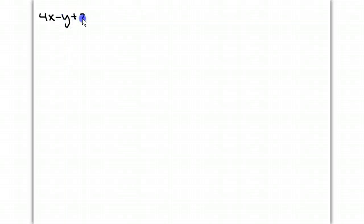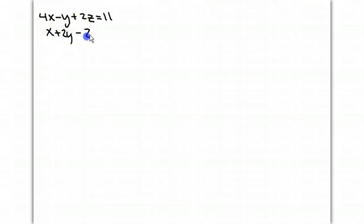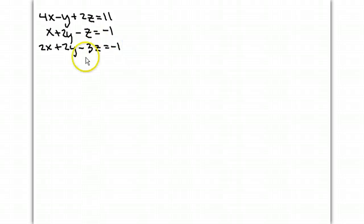Let's show you the 3 by 3 matrix. So let's say you have 4x minus y plus 2z equal 11. That's one equation. x plus 2y minus z equal negative 1 is another equation. 2x plus 2y minus 3z equal negative 1 is another equation.